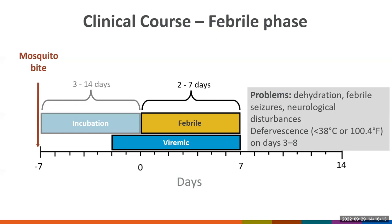Starting with the febrile phase, when the patient presents with the common symptoms of dengue, which usually lasts 2 to 7 days. The patient is viremic during this phase, even a couple of days before symptoms start, which means a mosquito that bites them can become infected and continue transmission. During the febrile phase, the most common clinical problems include dehydration and febrile seizures and neurological disturbances in young children. Defervescence — the abatement of fever to less than 38°C or 100.4°F — occurs on day 3 to 8. After the febrile phase, most patients will start to improve.